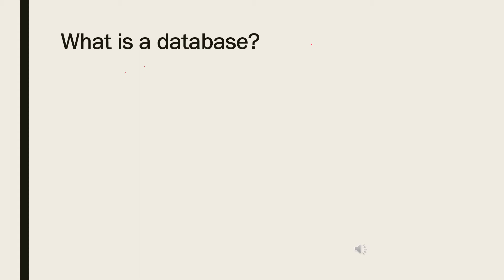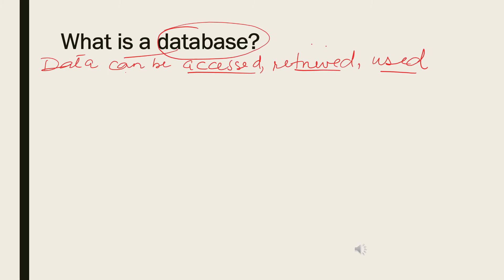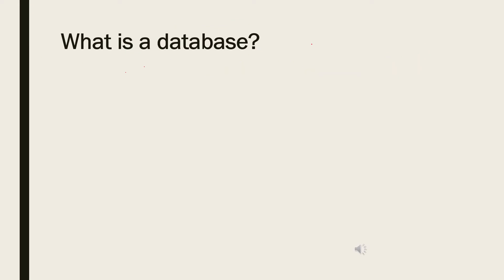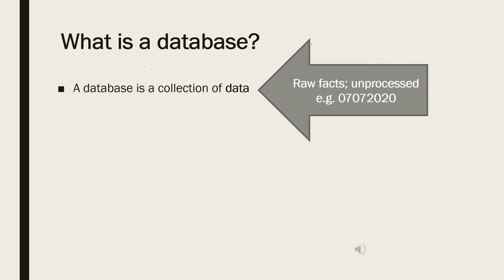A database organizes data in such a manner that it can be accessed, retrieved, and used. A database can be referred to as a collection of related data. Remember, data refers to raw facts or unprocessed information. For example, the numbers 07072020 are just a group of numbers.